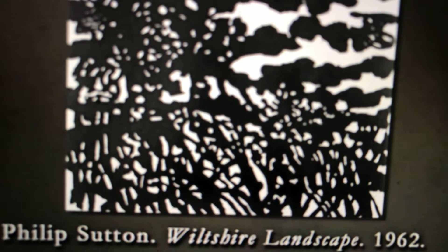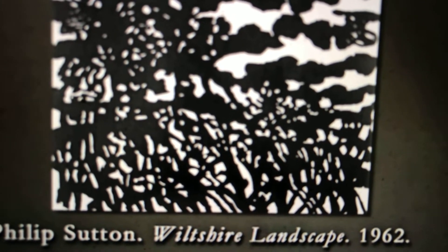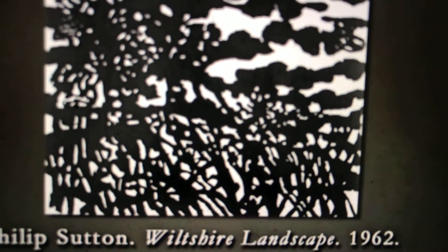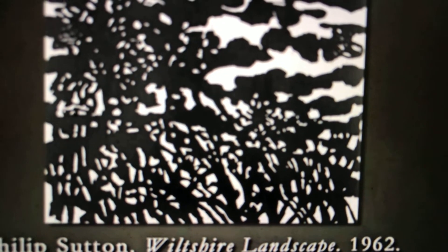We have examples of landscapes, and we still enjoy lots of landscapes. Let me show you one that's a little bit different. This is the work of Philip Sutton, an English artist. It's called Wheelchair Landscape, from 1962, and it's a woodcut. I love this particular work.